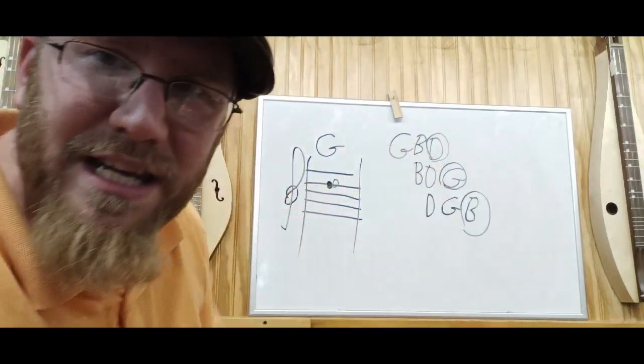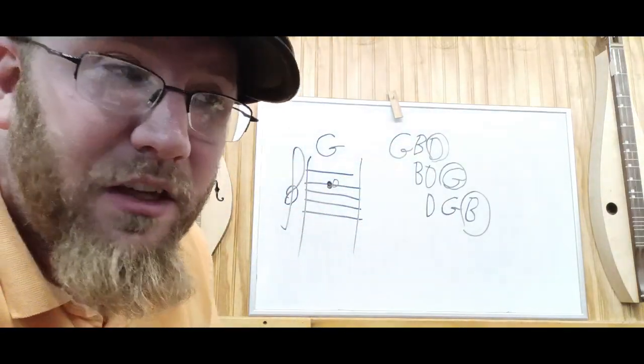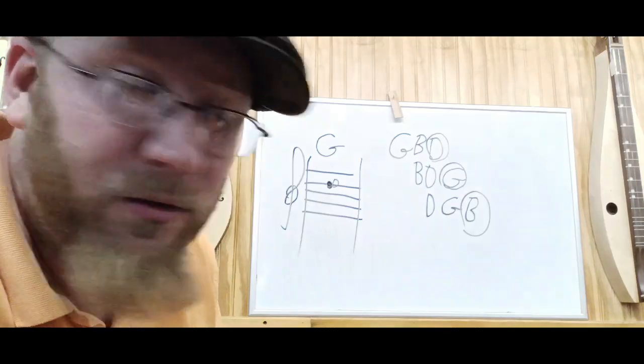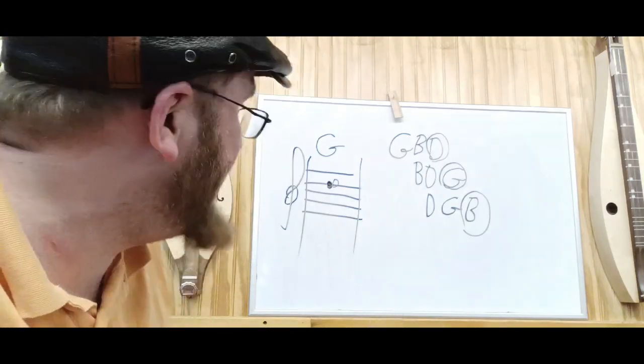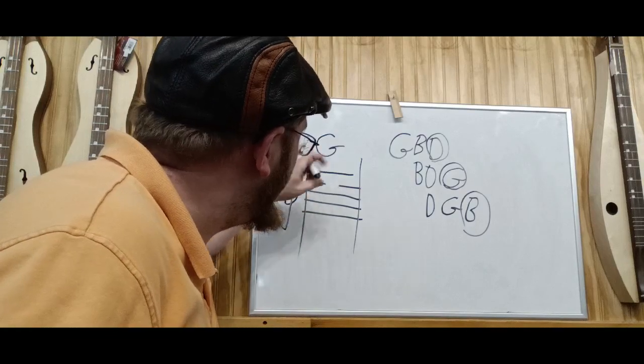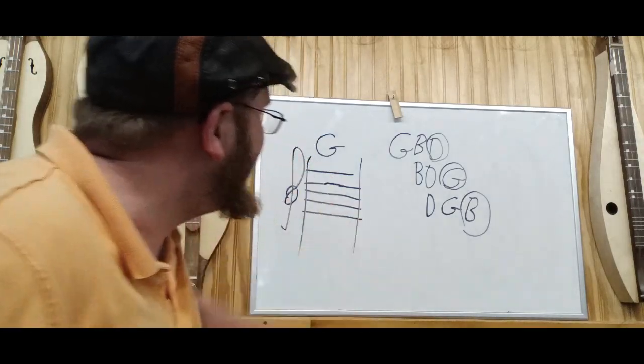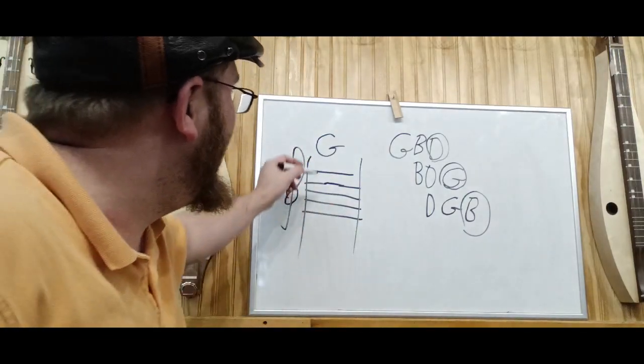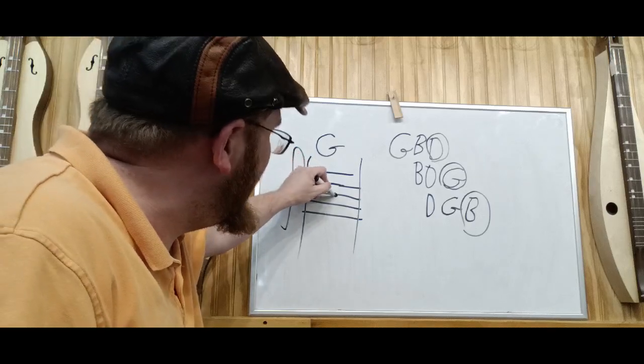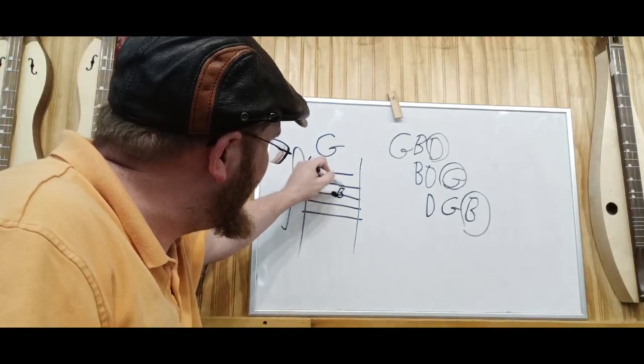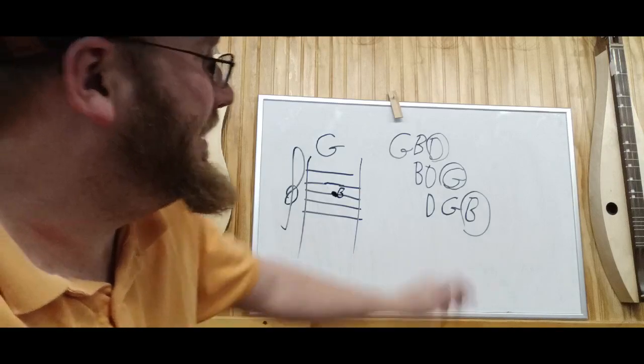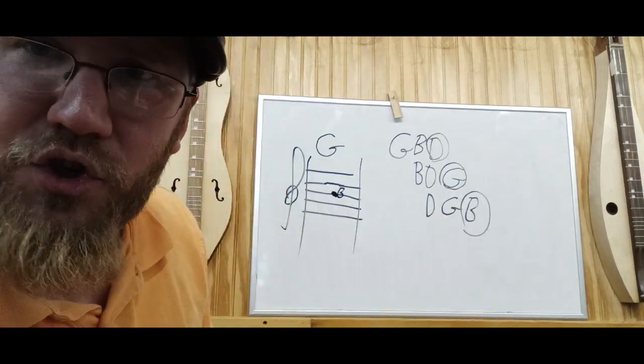This G, B, D is the chord that you want to use. It's as simple as that. If I erase that and I say here is a B note, we are using this inversion: D, G, B.